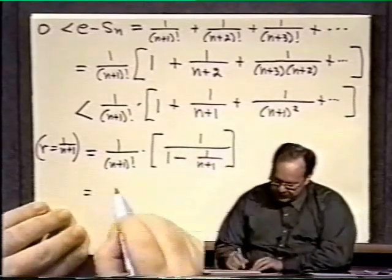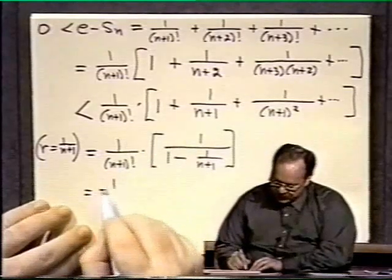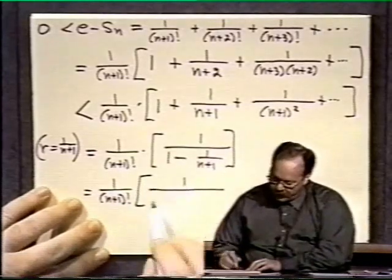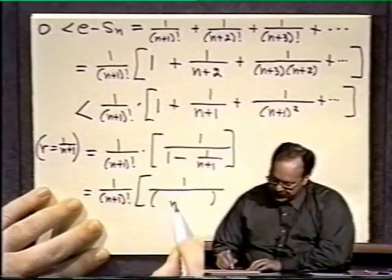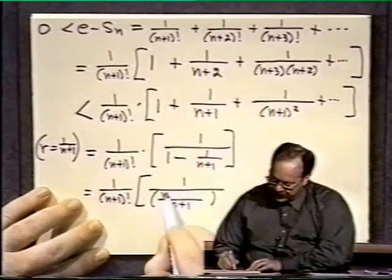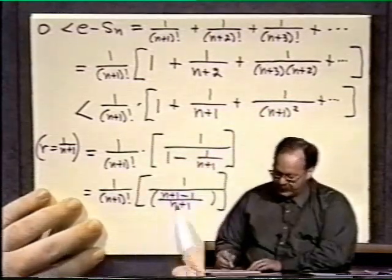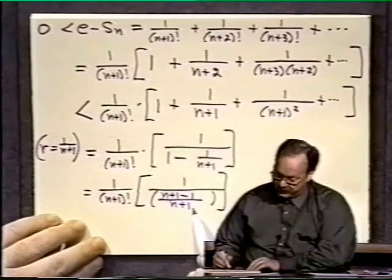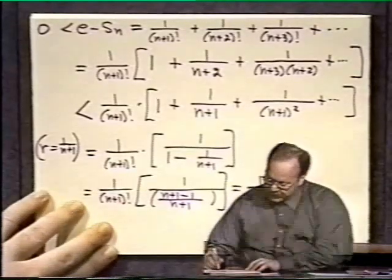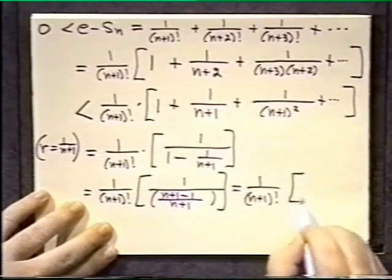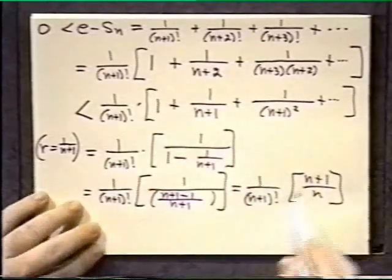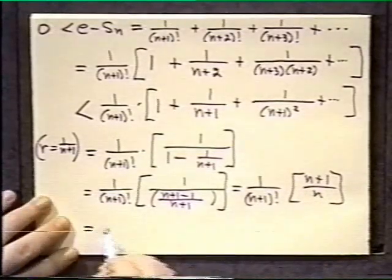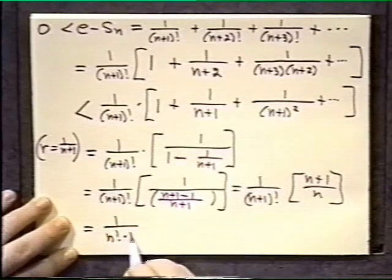And the rest of this is a bit of algebra. We want to simplify all of this. So this is 1 over n plus 1 factorial times, let's see what we get here. We get 1 over on the bottom. We're going to get a single fraction. Denominator n plus 1. And we have n plus 1 minus 1 on the top. n plus 1 minus 1 is n. So I have n over n plus 1 on the bottom. Since this is a fraction, a reciprocal, it will flip over. So this is 1 over n plus 1 factorial times n plus 1 over n. Well, of course, the n plus 1 there and the n plus 1 here will cancel, leaving n factorial on the bottom. So this is now 1 over n factorial times n.